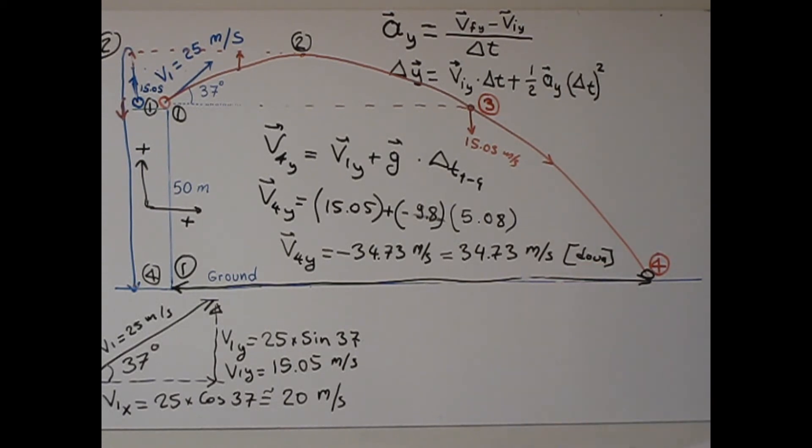This is the y component of the final velocity. The horizontal component is constant, basically 20 meters per second. The vertical component is a little bit longer, 34.73. So v4 is this one.